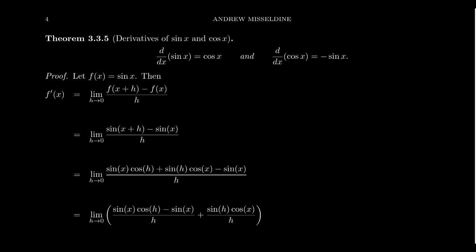This is the limit of a difference quotient. If we plug in the specific function f, which is sine, we end up with the limit as h approaches 0 of sine of x plus h minus sine of x, over h. Now if you try to approach this with just an algebraic perspective, you'd be really stuck — you can't foil out the numerator, and the other algebraic techniques we've tried would also not be effective here.